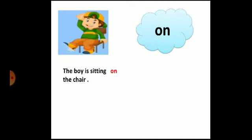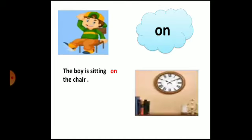Now we will see the preposition 'on'. Can you see where the boy is sitting? The boy is sitting on the chair. So 'on' shows the position of the boy — the word 'on' is a preposition. Now, where is the clock? The clock is on the wall. So 'on' is the position word.